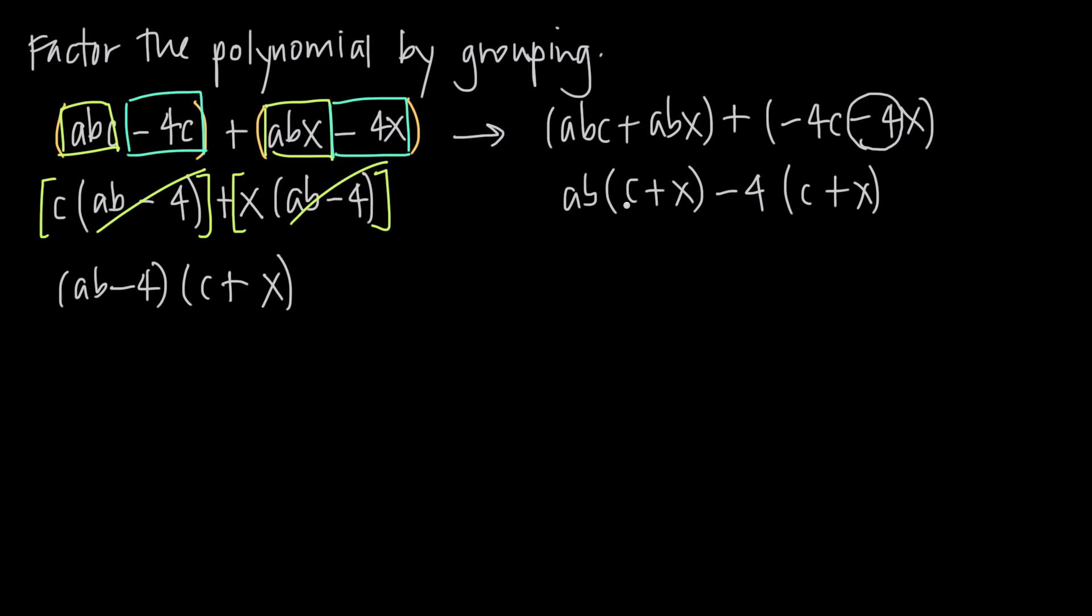But now just like before, we have this common factor left over of C plus X, which we see in both terms. So if we pull a C plus X out in front, what we're left with is just the AB from this first term, so quantity AB, and just the negative 4 from the second term, so minus 4. And you can see that we come up with the very same answer regardless of how we group the terms. Remember, just because these factors are multiplied together in the opposite order doesn't change the value. This answer here is the same as AB minus 4 times C plus X, which is the same as the answer we got the first time.